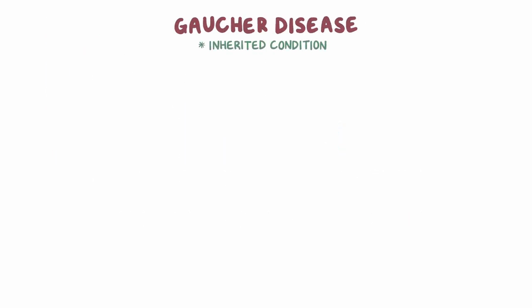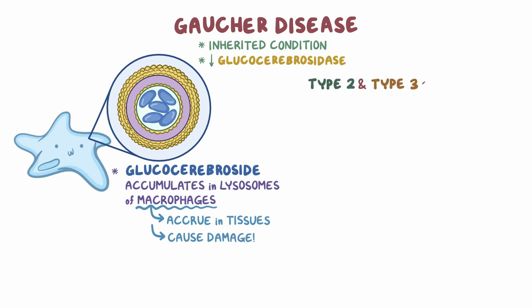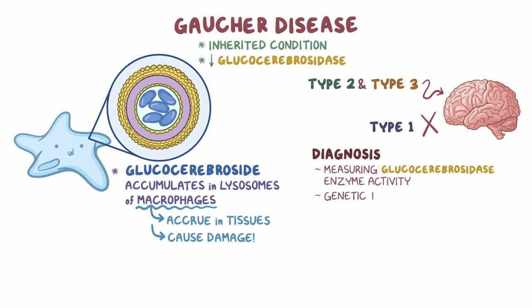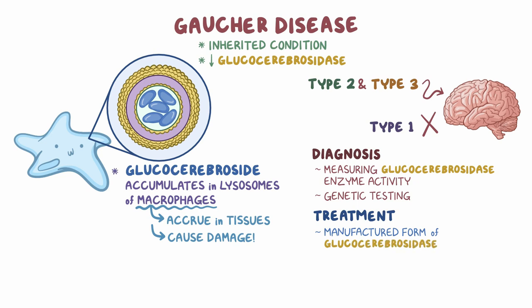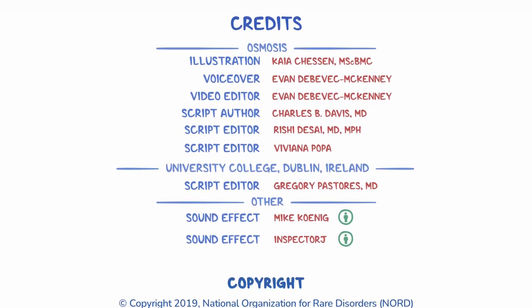Here's a quick recap. Gaucher disease is an inherited condition characterized by insufficient levels of glucocerebrosidase. Glucocerebroside accumulates in the lysosomes of macrophages that accrue in multiple tissues and cause damage. The types 2 and 3 forms of Gaucher disease involve the brain, while type 1 does not. Diagnosis includes measuring the glucocerebrosidase enzyme activity and genetic testing, and treatment includes a manufactured form of glucocerebrosidase.